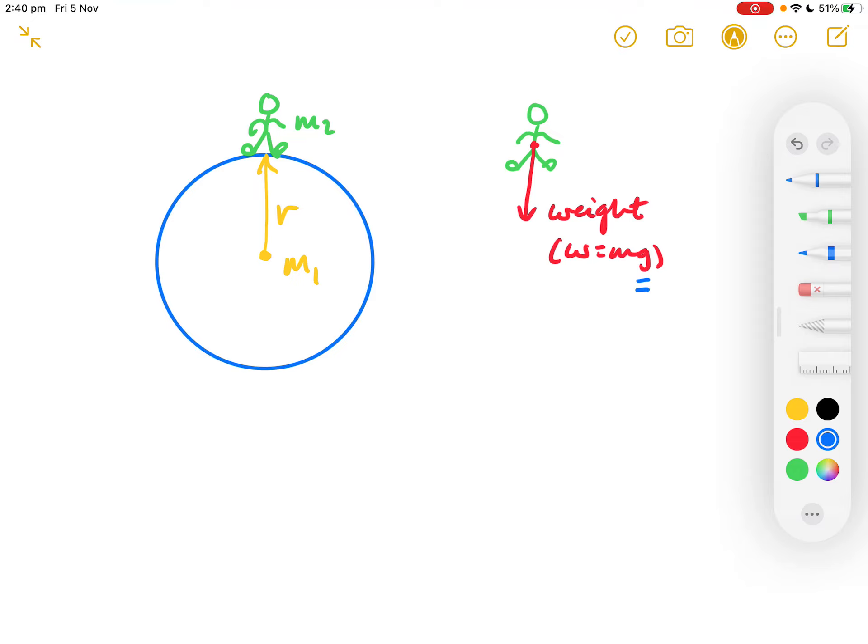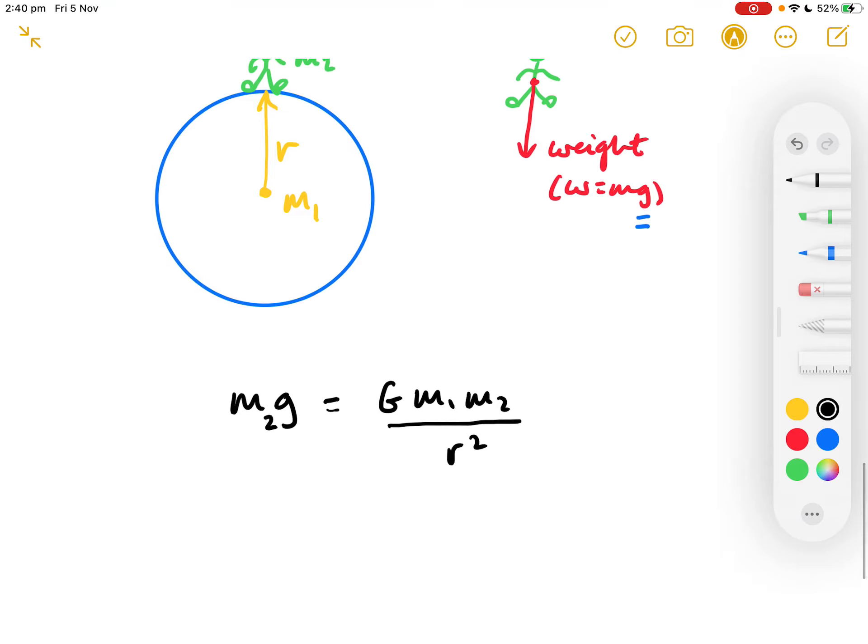We can equate the simple weight equation W equals Mg with the gravitational attraction force from the universal law of gravitation. So, in other words, what we can see is that Mg equals G M1 M2 over R squared. Now, in the Mg equation, M is of course the mass of the person, so that's M2.